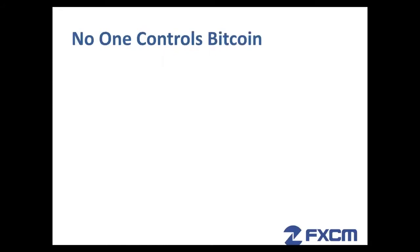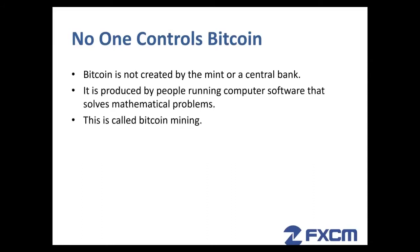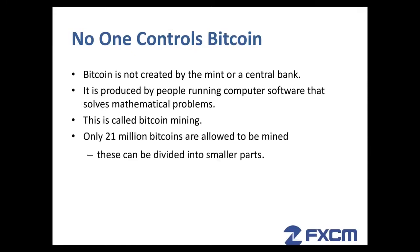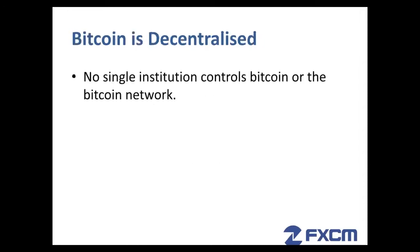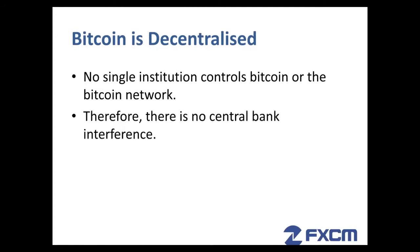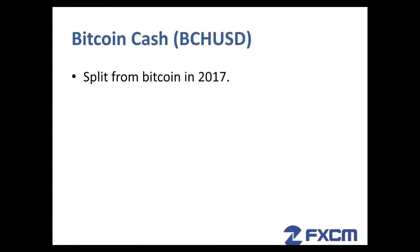The first one we're going to start with is, of course, Bitcoin. Bitcoin (BTCUSD) is simply electronic money. It is decentralized, and Bitcoins are created and held electronically, so no one controls Bitcoin. It is not created by any Mint or any central bank. It is produced by people running computer software that solves mathematical problems — this is called Bitcoin mining. Only 21 million Bitcoins are allowed to be mined, but these can be divided into smaller parts. No single institution controls it or the Bitcoin network, so no central bank interference whatsoever.